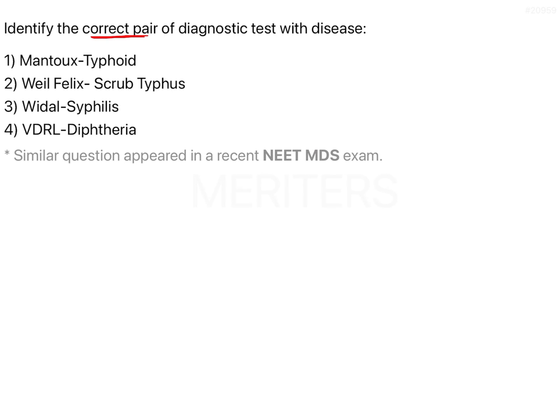Identify the correct pair of diagnostic tests with disease. The given combinations are: Mantoux for typhoid, Weil-Felix test for scrub typhus, Vidal test for syphilis, and VDRL test for diphtheria.